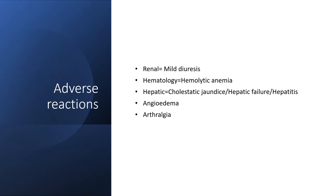The renal system can give mild diuresis, and hematology could reveal hemolytic anemia. So if someone has been on this medication for a long time and you haven't done a complete blood count, you're not helping — there might be anemia. The hepatic system could give cholestatic jaundice, hepatic failure, or even hepatitis, angioedema, and arthritis.